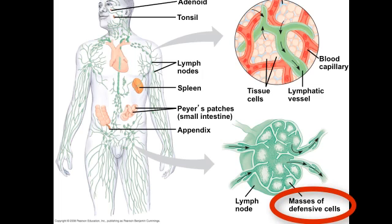Dendritic cells will migrate to lymph nodes after interacting with a pathogen. There, the dendritic cells sound an alarm of infection by communicating with other immune cells, starting the process of adaptive immunity or acquired immunity, where cells can learn how to attack specific antigens.